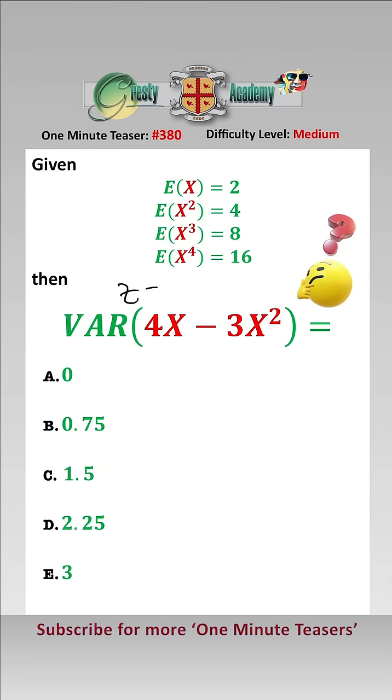So let's let z equal 4x minus 3x squared, and then we have var of z, which is what we want.